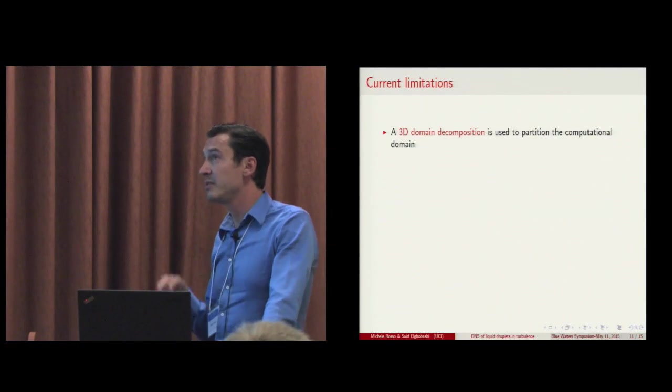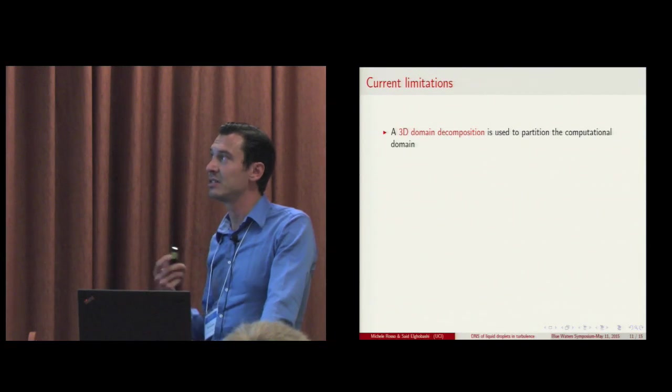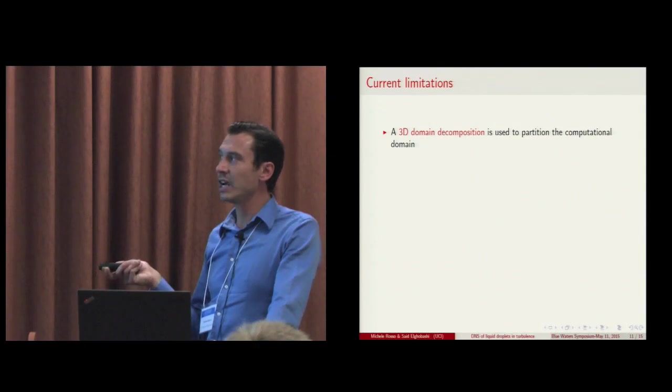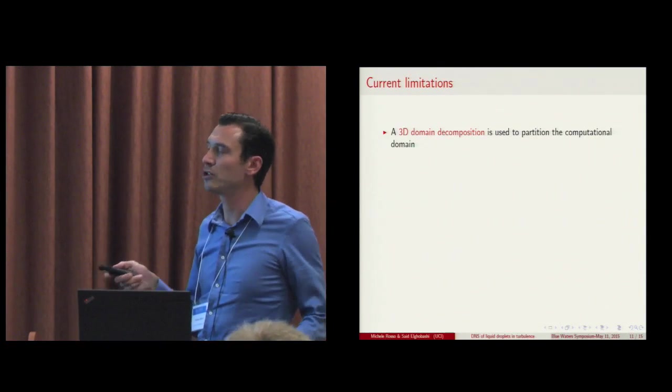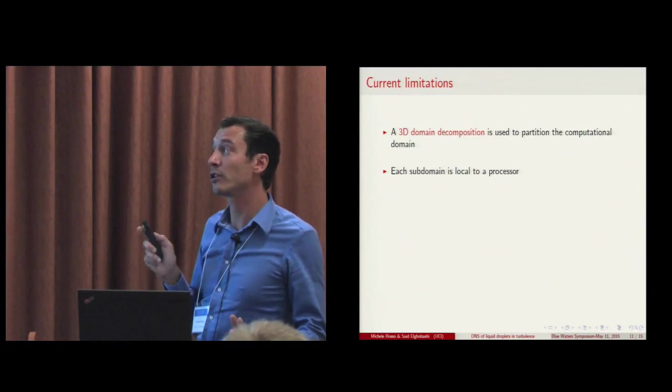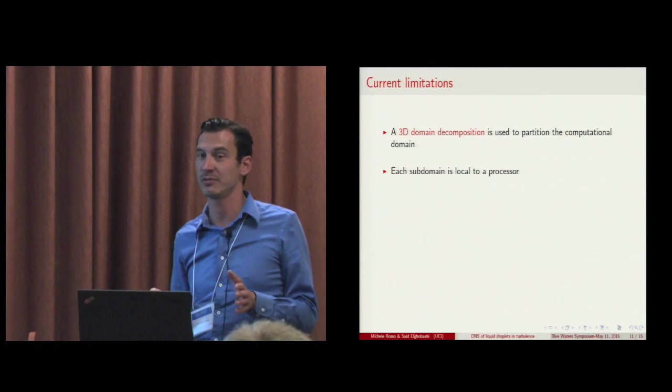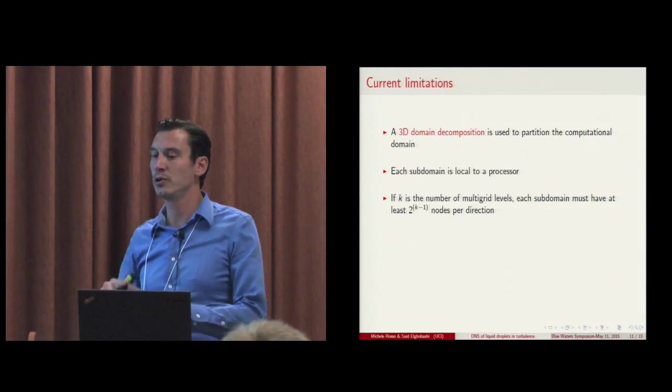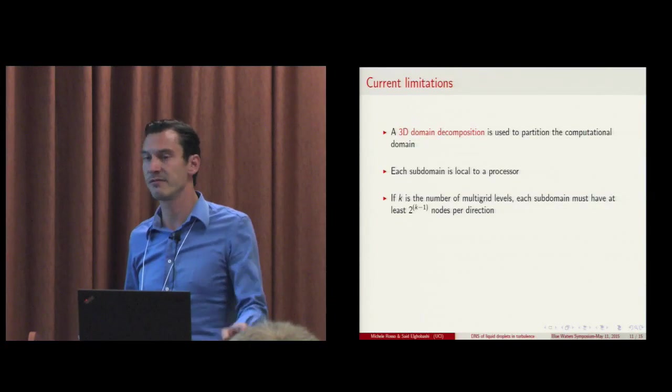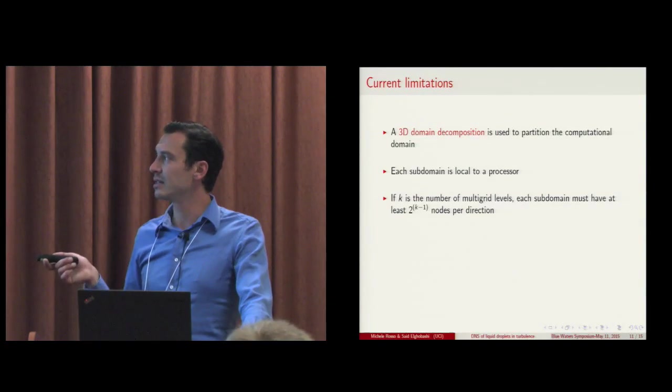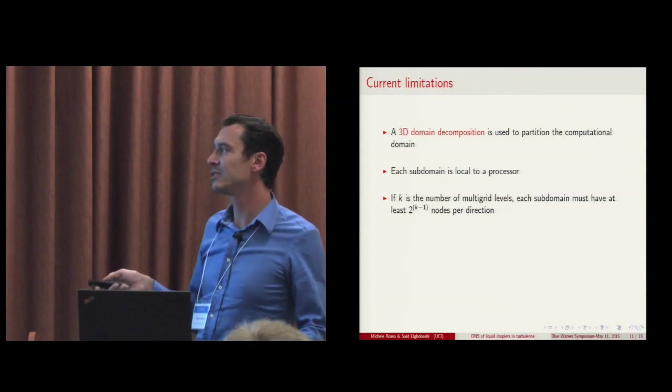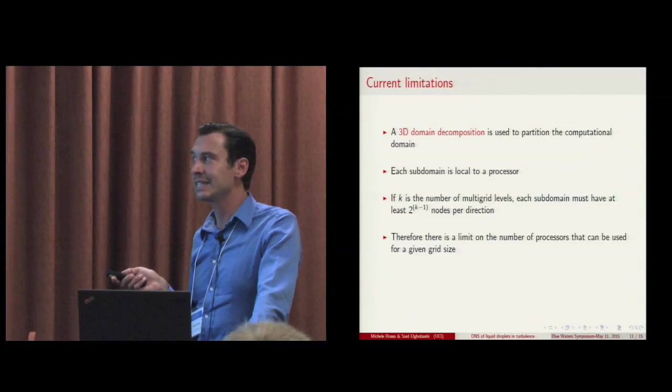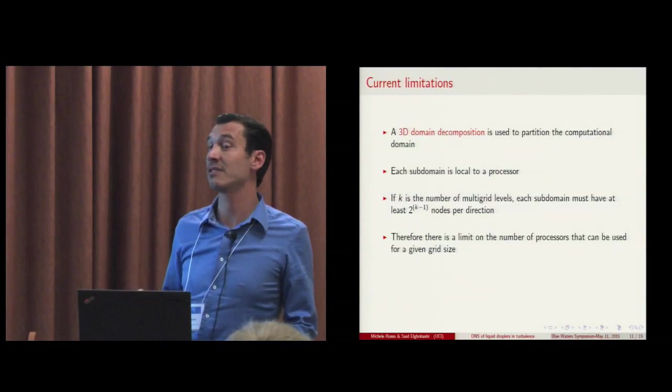Now, the implementation of multigrid has some limitations that we hope to overcome soon. In fact, we adopt a 3D domain decomposition to partition the computational domain, and therefore each subdomain is local to a certain processor. The problem is that multigrid, if we decide to use a certain amount of multigrid levels, for example K, we are limited to have at least 2 to the K-1 nodes per direction. And that limits the amount of processors that can be used for a given grid size.